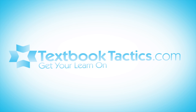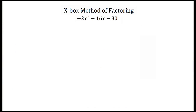This is an example on using the Xbox method of factoring to factor quadratic equations. We're going to start this example with the expression negative 2x squared plus 16x minus 30. Now before you can use the Xbox method of factoring, you have to take out any greatest common factor that's in all three of these terms. If you don't take out the greatest common factor, then the Xbox method of factoring might not work.